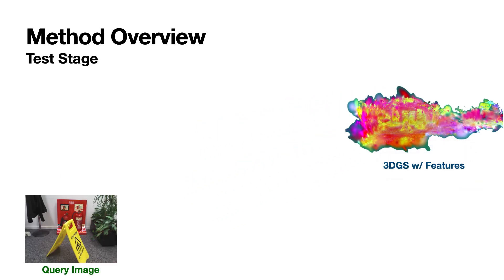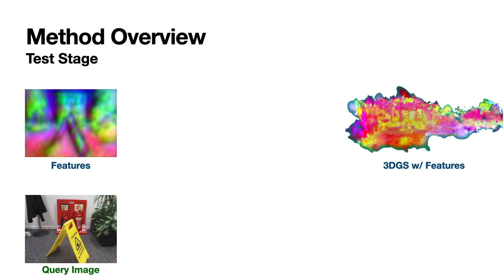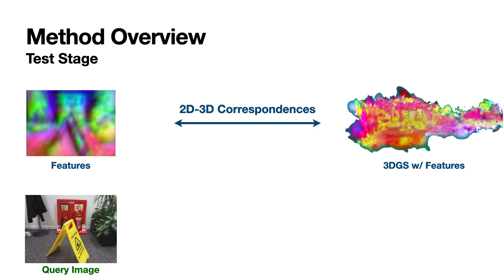During the test stage, we begin by extracting features from the query image. We then establish 2D-3D correspondences between the sparse keypoints of the query image and the 3D Gaussian point cloud, employing greedy matching of the extracted and distilled features.